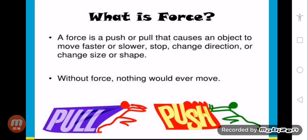For example, if there is a ball and you put it on the ground and push it, then the movement will be faster. If you try to stop the movement from the opposite direction, then the movement will slow down, and at the end it will stop.